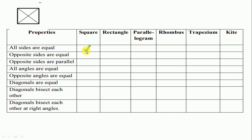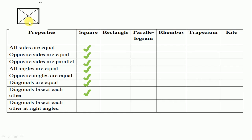Opposite sides are equal — all sides are equal means opposite sides are also equal, so we tick as right. Opposite sides are parallel — yes. All angles are equal — in a square, all angles are 90 degrees, so it is equal. Opposite angles are equal — yes. Diagonals are equal — yes, diagonals are equal. Diagonals are bisecting — diagonals bisect at right angle, so we tick as right.